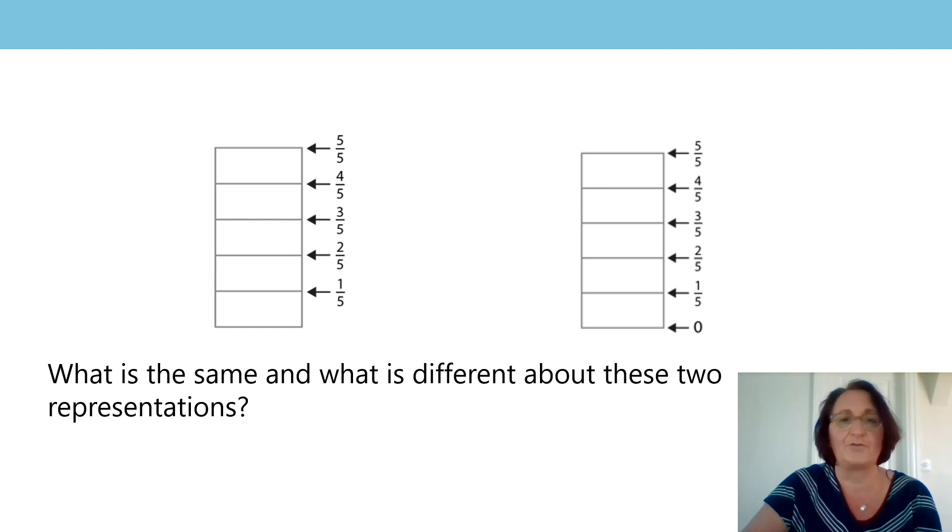What about what's different? Yes, there's something different in the notation. On the one on the right hand side, there is a zero on the baseline. Okay, so on the container, that would show us where the contents would come to if the container was completely empty. So it's a baseline that shows us that zero that shows us that there are no fifths. Okay, well done.